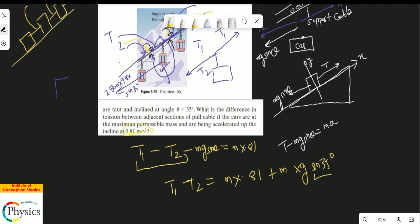Now you don't need to find the exact tensions; what you need to find is just the difference. So T1 - T2 = m × 0.81 + m × g × sin 35°. You can go to a sine table and see this. So this is: m is 2800, multiply by 0.81, plus 2800 × 9.8 × sin 35°. That's the difference you will get.